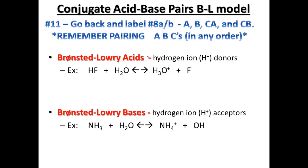We're going to jump back to number eight in your notes to go through and label, in any order, our conjugate acid-base pairs — remember our ABCs. Number eight: hydrogen fluoride plus H2O produces H3O+ and fluoride ion. We need to find out who's donating the hydrogen. In this case, hydrogen fluoride is going to donate that hydrogen, so it becomes the acid. H3O+ in the reversible reaction could donate that hydrogen back, so it's going to be our conjugate acid.